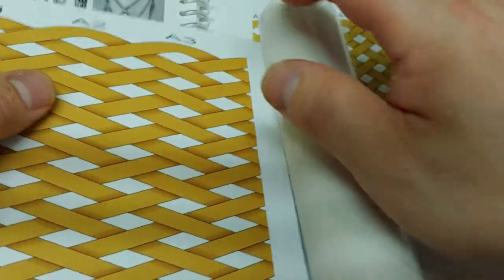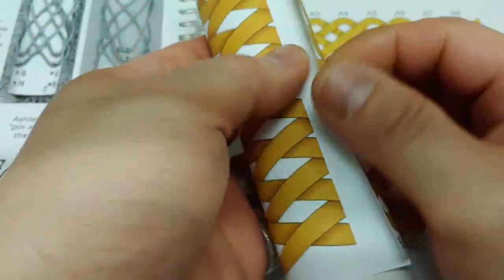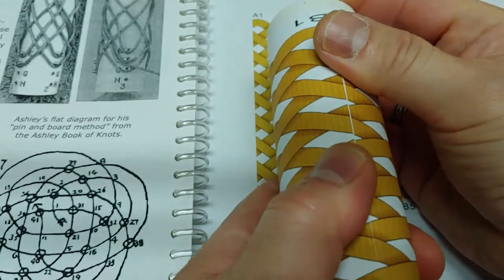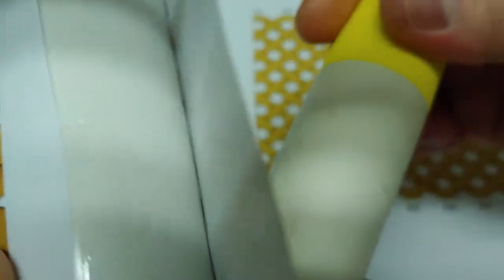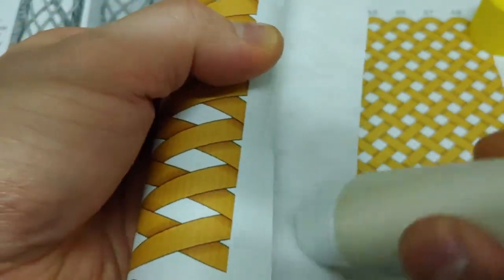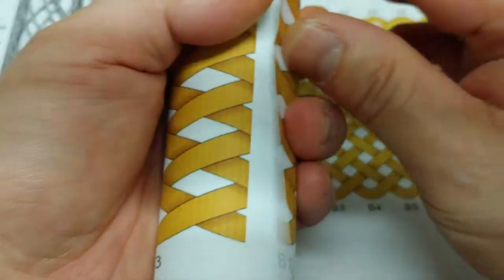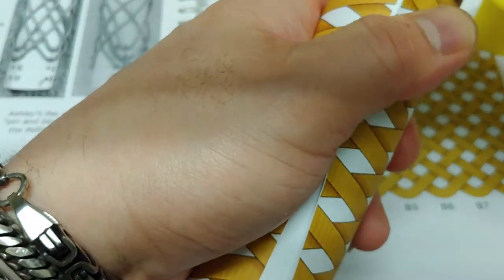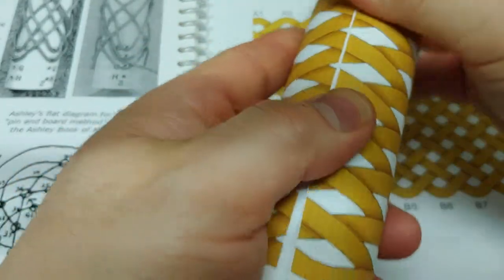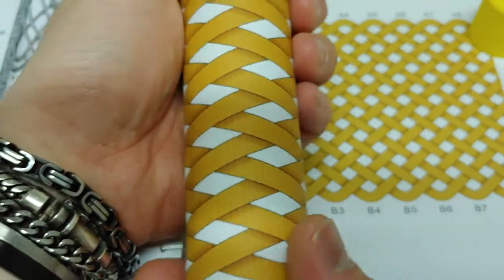I'm cutting the paper to wrap around the PVC cylinder. Then I use stick glue. Look at this.